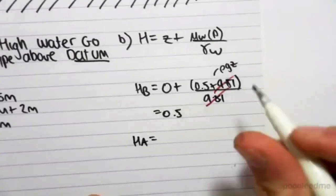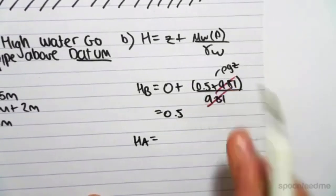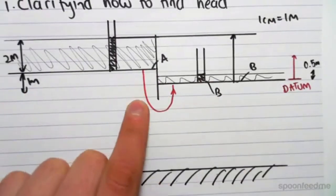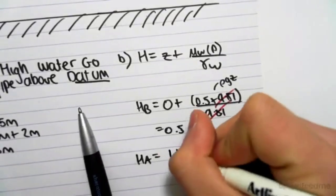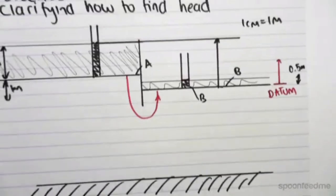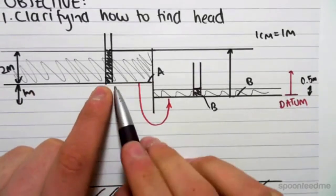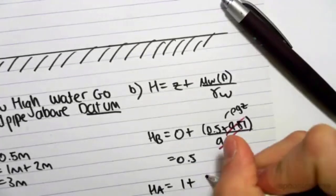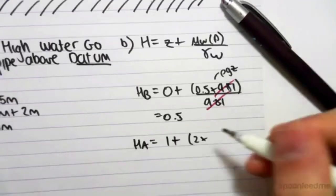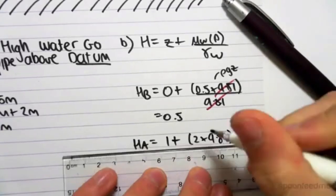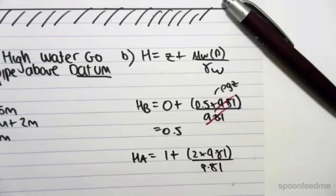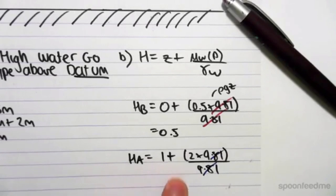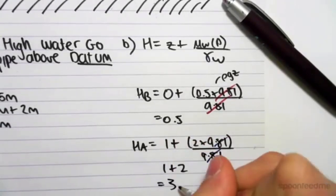Now the head at A, similarly, we'd use this formula, z plus pore water pressure on gamma of water. So point A, as we scaled off before, is 1 meter above the datum. That's the elevation. So we have 1 meter plus. Now, the pressure at point A, so the pressure at the bottom, is a buildup of the water pressure above us. So that's 2 meters of pressure. So it's 2 by 9.81. So that's the pressure, divided by 9.81. Similarly, these two things would cancel to give us 1 plus 2. So 1 plus 2, which would equal 3 meters.